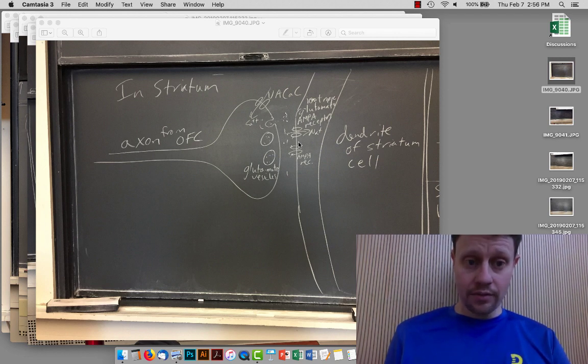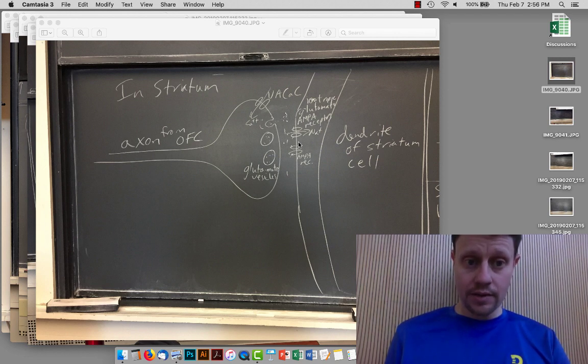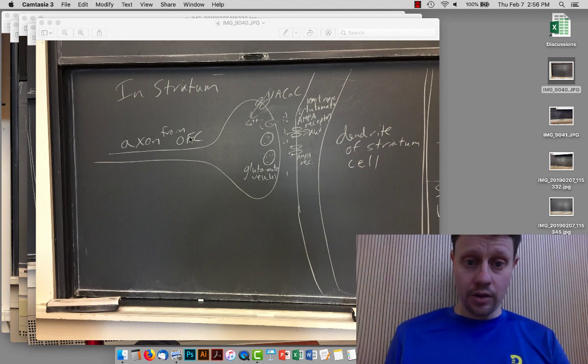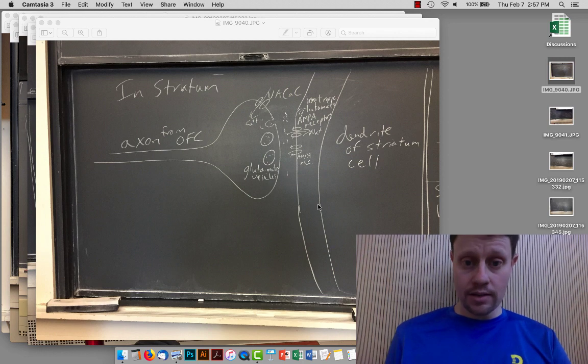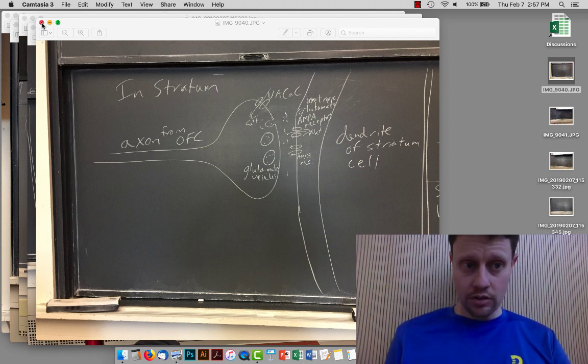For this class period, we talked about obsessive-compulsive disorder and a variety of studies that looked at axons from the orbital frontal cortex into the striatum, where they make contact with dendrites of cells that live in the striatum. These synapses themselves are also in the striatum.